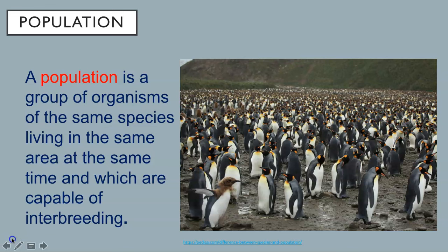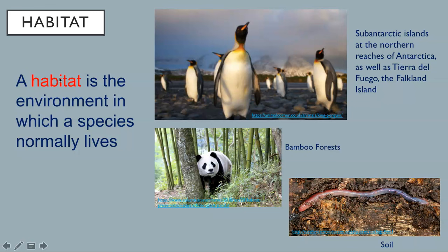A population is a group of organisms of the same species living in the same area at the same time, which are capable of interbreeding. In this image, you see a population of king penguins. A habitat is the environment in which a species normally lives. The habitat of the king penguin is sub-Antarctic islands at the northern reaches of Antarctica, as well as Tierra del Fuego and the Falkland Islands. The habitat of the giant panda is a bamboo forest, and the habitat of an earthworm is the soil.